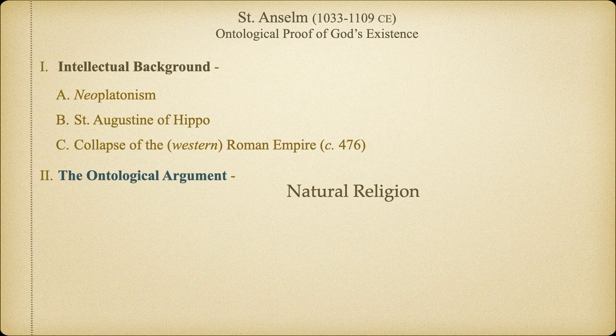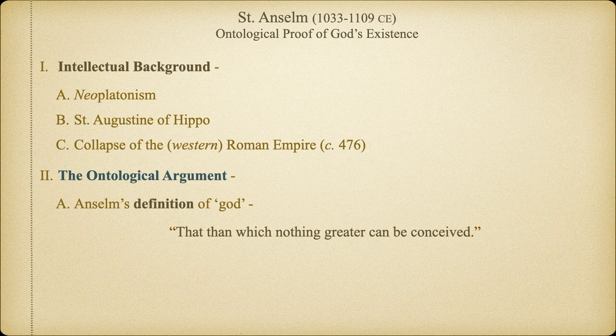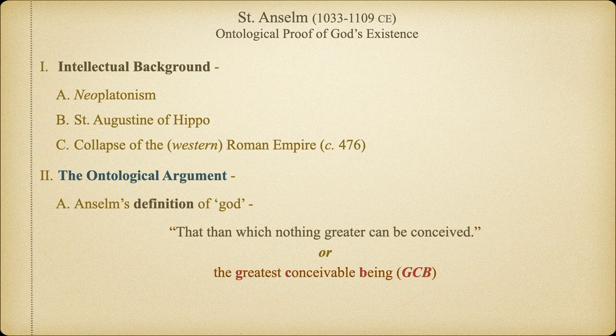The version of the ontological argument Anselm will develop was to become a classic in this branch of metaphysics. It's important to note that this argument rests on the definition of God that Anselm starts with. Anselm will begin by defining God as that than which nothing greater can be conceived. Here we find shadows of Plotinus' One — that which is beyond, that which is the source of all existence. We can simplify this definition as the greatest conceivable being, or just the GCB.